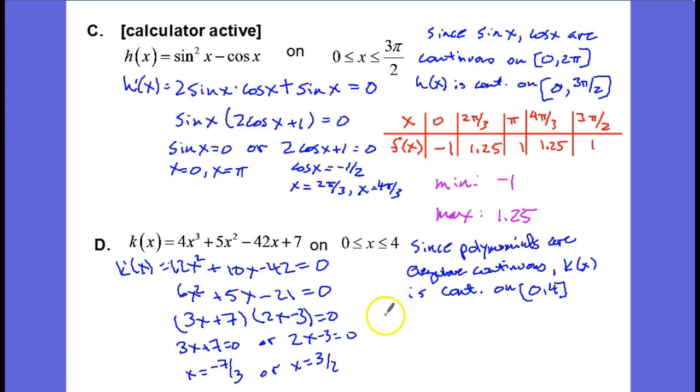And then we can proceed to our candidates test. So we have x, and our x values are going to be the left endpoint is 0, and we can exclude this critical value because it's not on the interval, so we'll just skip over that one. Since it's not included on the interval, we don't need to even consider it.